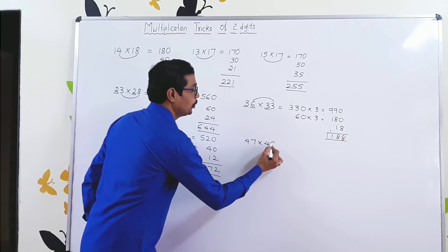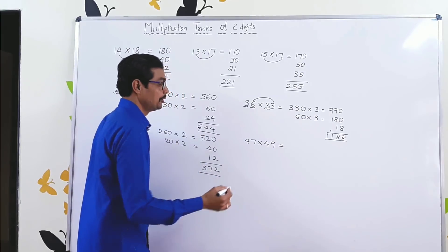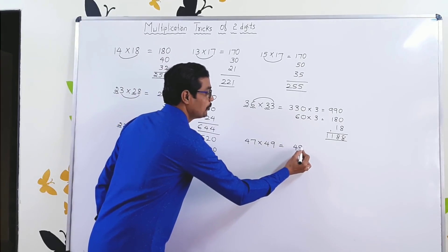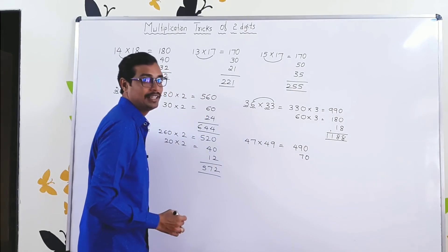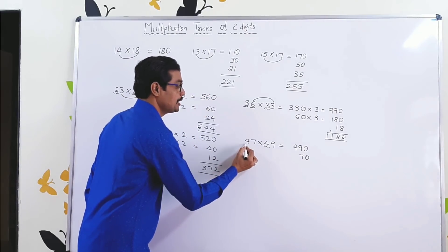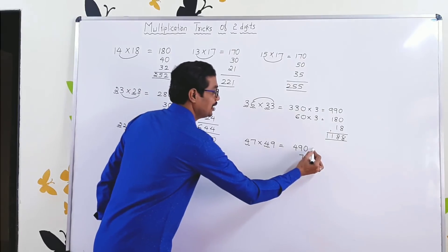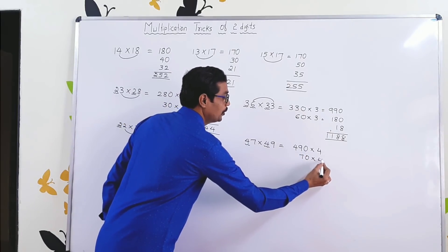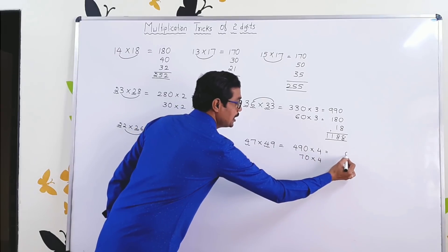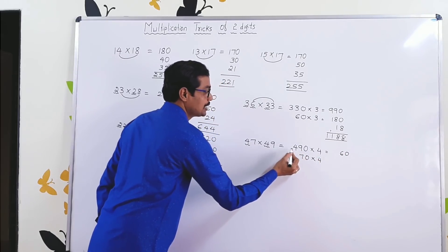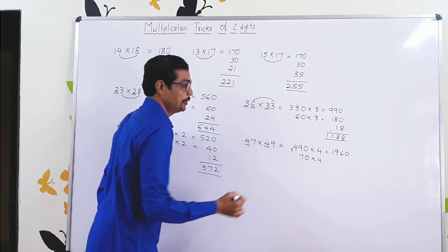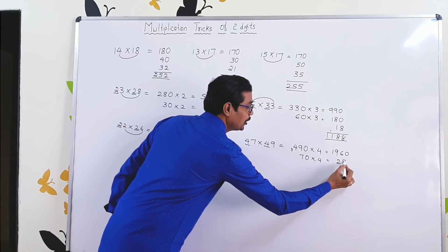47 × 49. Very simple. 490. 7, write it as 70. In tens place, 4 is there. Multiply by 4. 4 × 9 is 36, carries 3. 4 × 4 is 16 plus 3 is 19. 70 × 4 is 280.